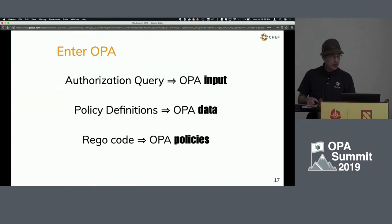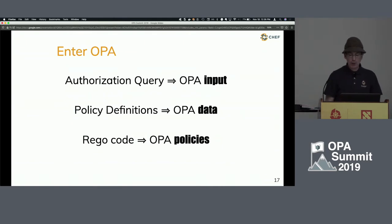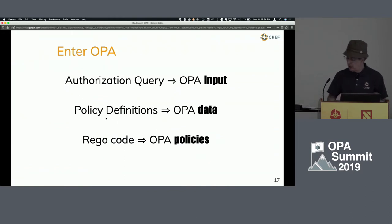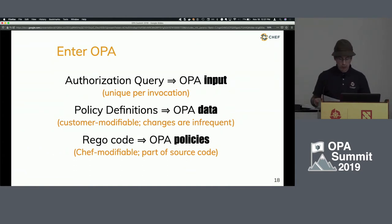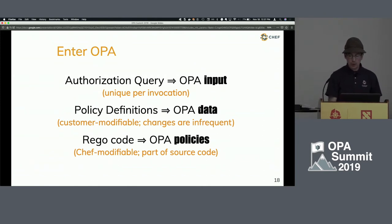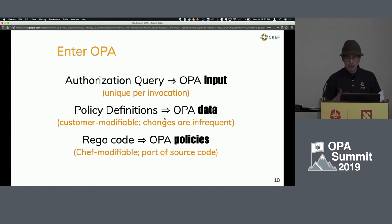Our domain terminology maps to OPA terminology like this: our query is what you feed to OPA as input; our policy definitions are OPA data; and our rego code are OPA policies. Unfortunately we have overlap in the term 'policy' — it means totally different things but there's no way around that. The query is unique per invocation. Our policy definitions, which is the OPA data, are customer-modifiable but changes are fairly infrequent — more of a configuration thing.